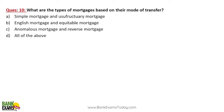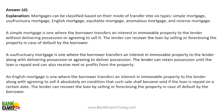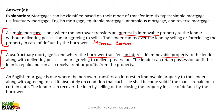Types of mortgages: first is the simple mortgage. As the name suggests, the borrower transfers an interest in immovable property — a simple example is a home loan. The borrower retains possession, and the lender has an interest in the immovable property. The lender can recover the loan by selling or foreclosing the property in case of default. The second is usufructuary mortgage, where the borrower transfers interest in immovable property to the lender along with delivering the possession, or agreeing to deliver possession — that distinguishes it from simple mortgage.